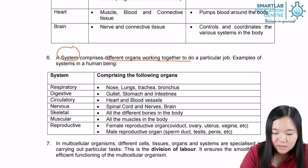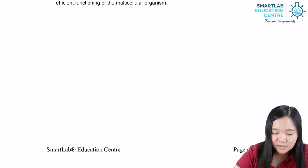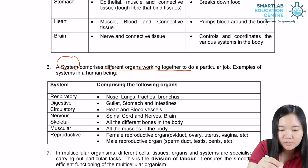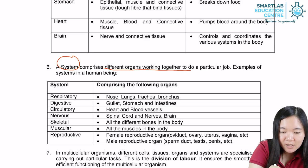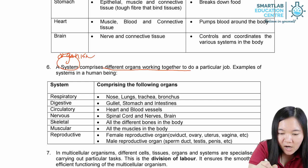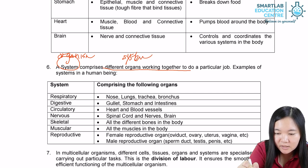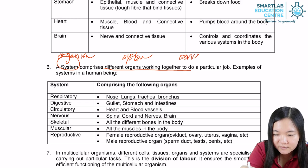Eventually, we have the definition of organism. It's not stated here, but you can actually add it on your own. If they ask for the definition of organism, an organism comprises of different systems working together to do a particular job or to serve an organism.